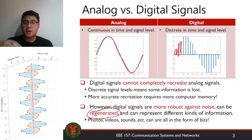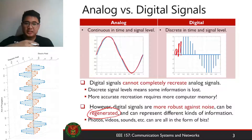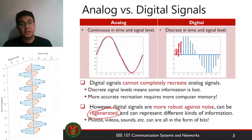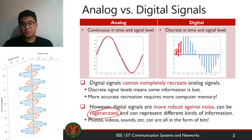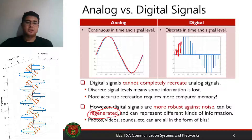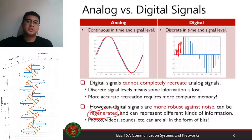Also, digital signals can be represented as bits, so different types of files — text, documents, PDFs, photos, videos, sounds — can all be represented in the form of bits. That means you can use the same digital transmission system to transmit all of those files using the same hardware. Unlike analog communication systems, where you need separate hardware to transmit speech versus television images.